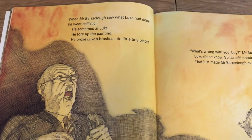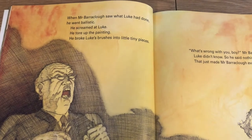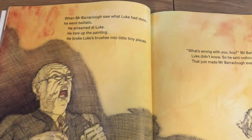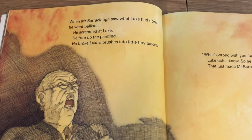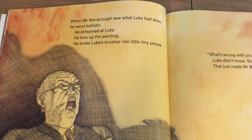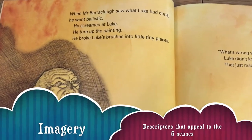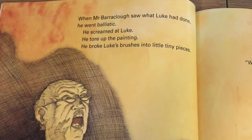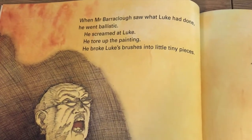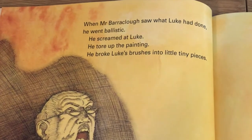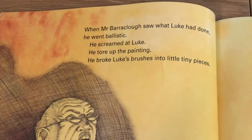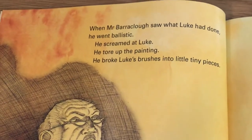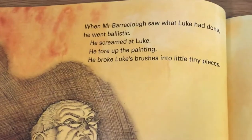Mr. Bearclaw saw what Luke had done. He went ballistic. He screamed at Luke. He tore up the painting. He broke Luke's brushes into tiny pieces. This example of imagery the author uses appeals to the reader's five senses. He creates a vivid image of what is transpiring between Luke and his teacher. We hear him scream, and we feel Luke's pain when Mr. Bearclaw tears up his painting.